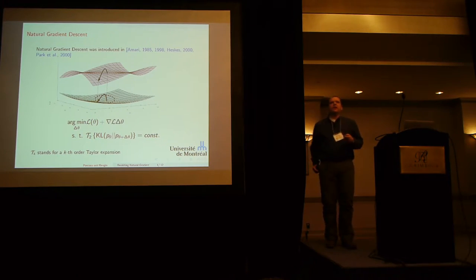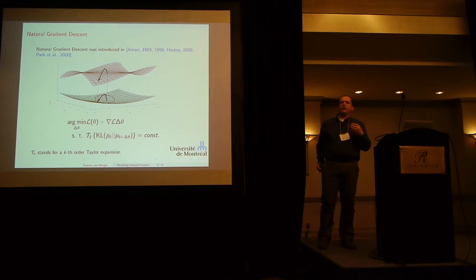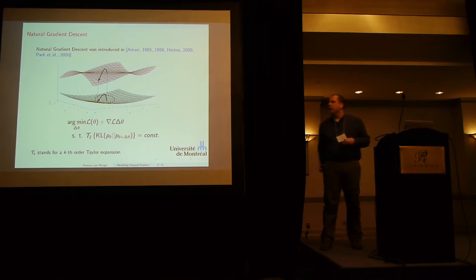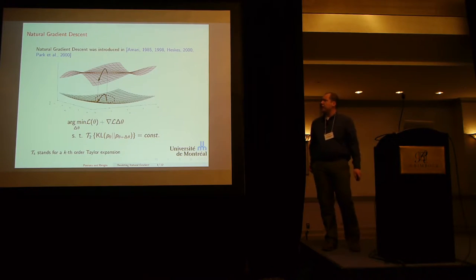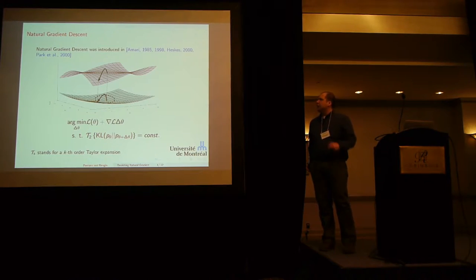So the idea is, instead of taking fixed-length steps in the parameter space, you want to take steps in the functional space, and you want to look at functions that are equally distant from each other. The algorithm was introduced based on concepts from information geometry, but here we're going to use a different approach to introduce it more explicitly, similar to what Heskes has done.